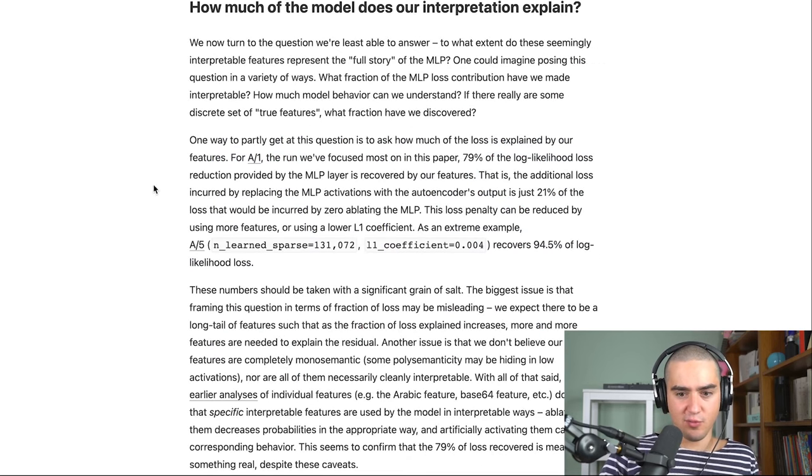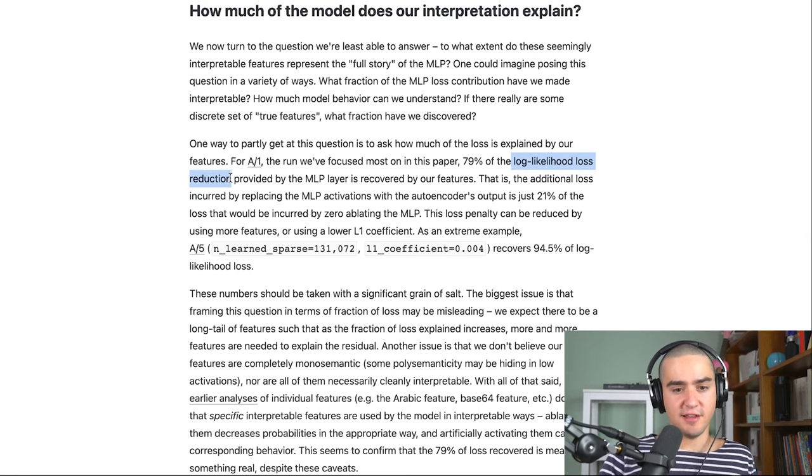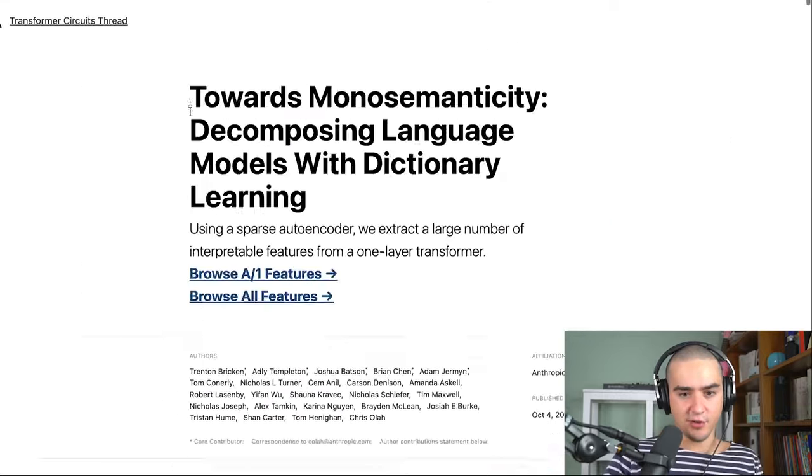They have something where they looked at how much of the log likelihood loss you reduce if you use the features instead of the MLP activations. You only lose 20% of information somehow or loss reduction by doing this autoencoder thing, which means that we kind of understood a lot of the information that was inside it. There are other things that are kind of interesting.